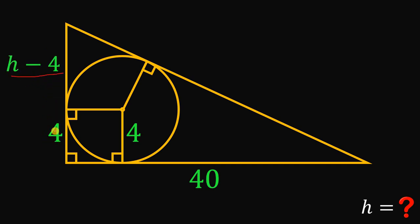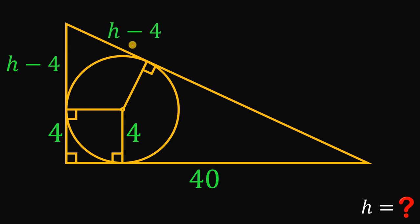So h minus 4 plus 4 gives us a total of h again. Take note that these two segments, by the property of a tangent line, must be the same length. To prove this, the quickest way is to draw a segment like this, and we get two congruent triangles.